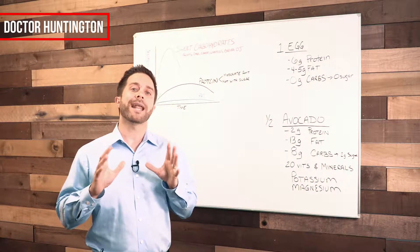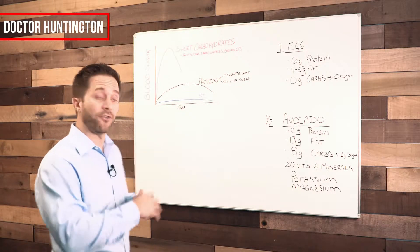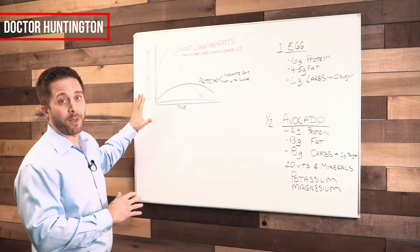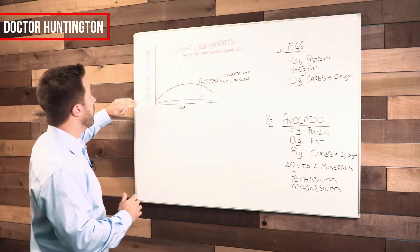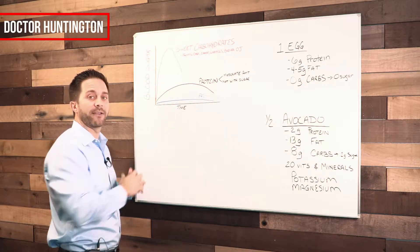But first, let's look at how each of these food groups actually affect blood sugar. Let's look at this graph. What I've drawn up here for you is a graph which shows rising blood sugar on this axis over time on this axis.